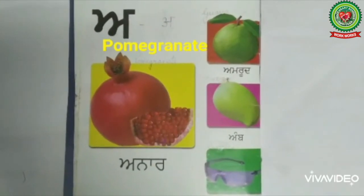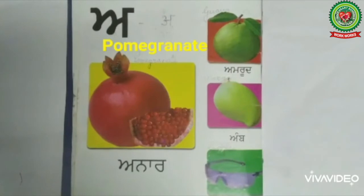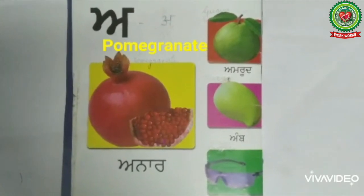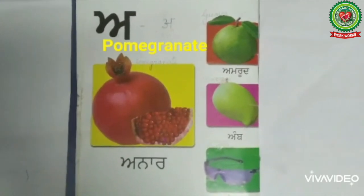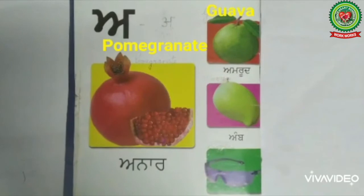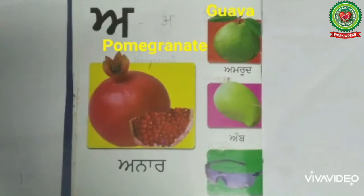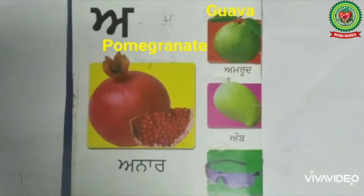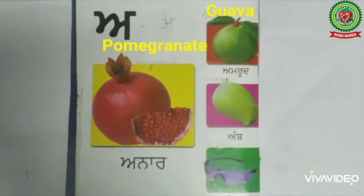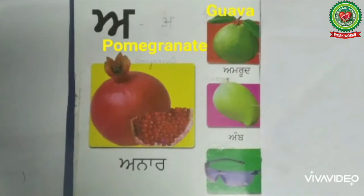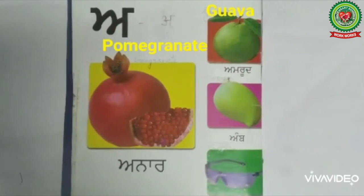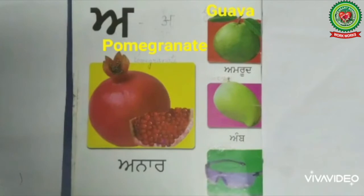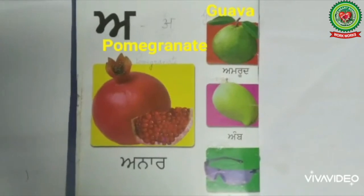Now look at the second picture and start reading: Ada, A — Amrood. Amrood means guava. G-U-A-V-A. Read it once again: Ada, A — Amrood. Amrood means guava.